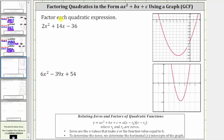In this video, we will factor quadratic expressions in the form ax squared plus bx plus c, where there's a common factor, using the graph of the related quadratic function. If we have a quadratic function in the form y equals ax squared plus bx plus c, we can write this as a times the quantity x minus r sub one times the quantity x minus r sub two, where r sub one and r sub two are the zeros — the values of x that make y equal to zero. To determine the zeros and write ax squared plus bx plus c in factored form, we determine the x-intercepts of the graph.